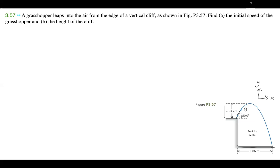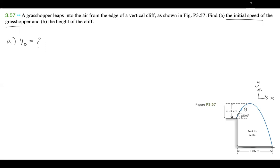Now that we have an overall understanding of the diagram, we can start by looking at Part A and identifying all the values we want and how we can approach this problem. What we want is the initial speed of the grasshopper — V-naught. We don't know what V-naught is. What we can use is speed in the Y direction, because the Y direction is going to give us enough information to get the initial speed. That works because if we look at this projectile problem broken into two components, the Y perspective gives us one-dimensional motion.